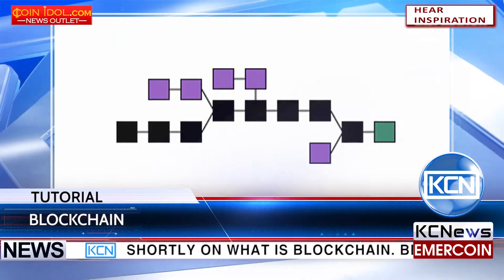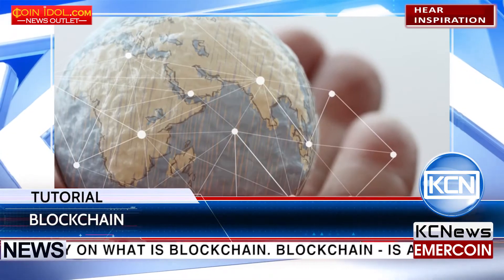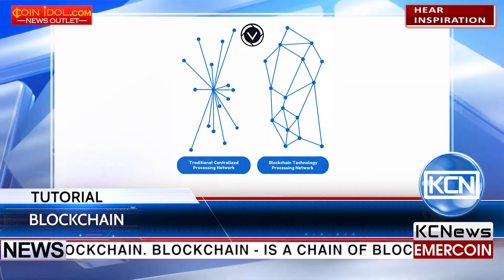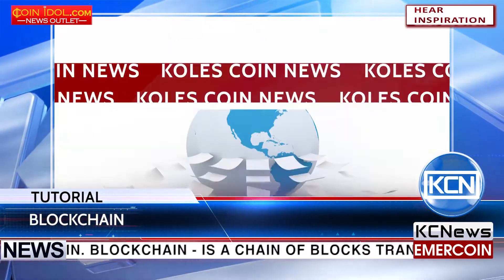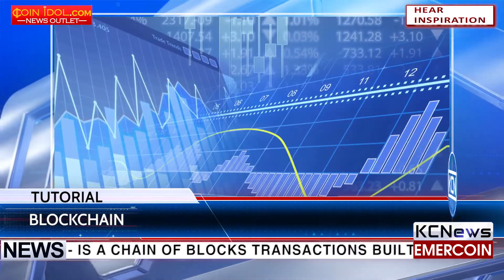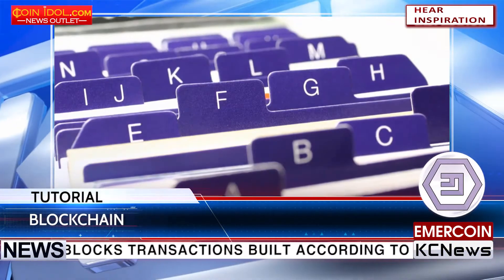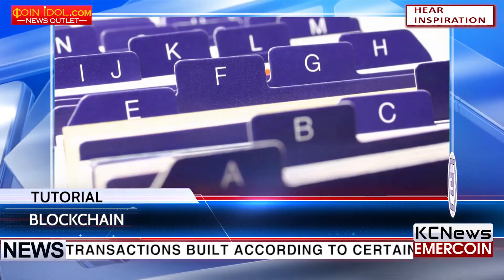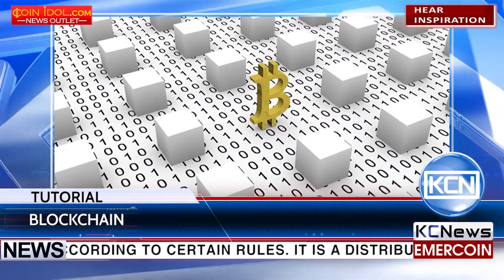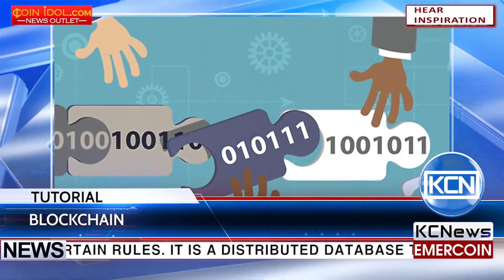Shortly on what is blockchain: blockchain is a chain of blocks transactions built according to certain rules. It's a distributed database that is used to maintain a continuously growing list of records called blocks. Each block contains a timestamp and a link to a previous block.